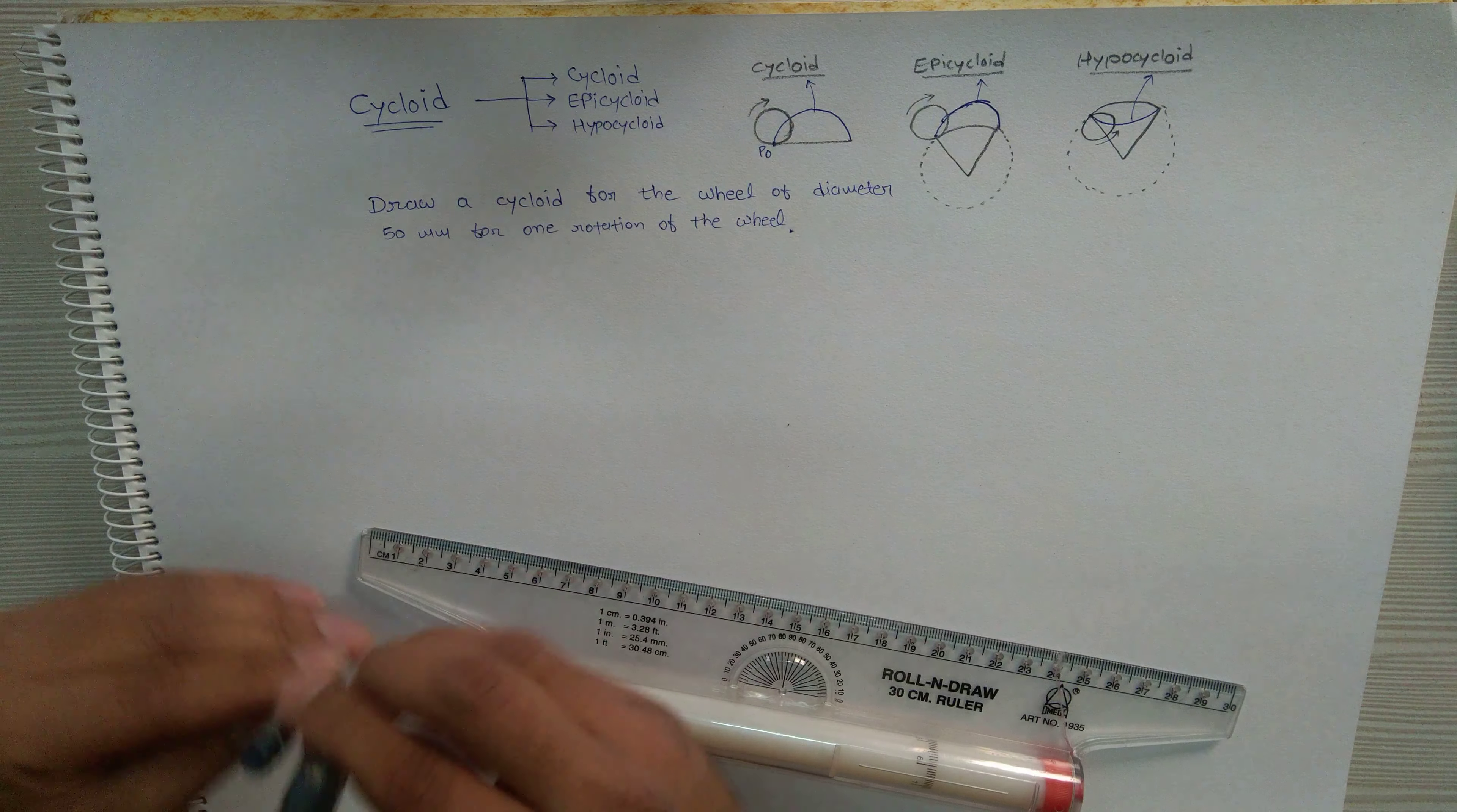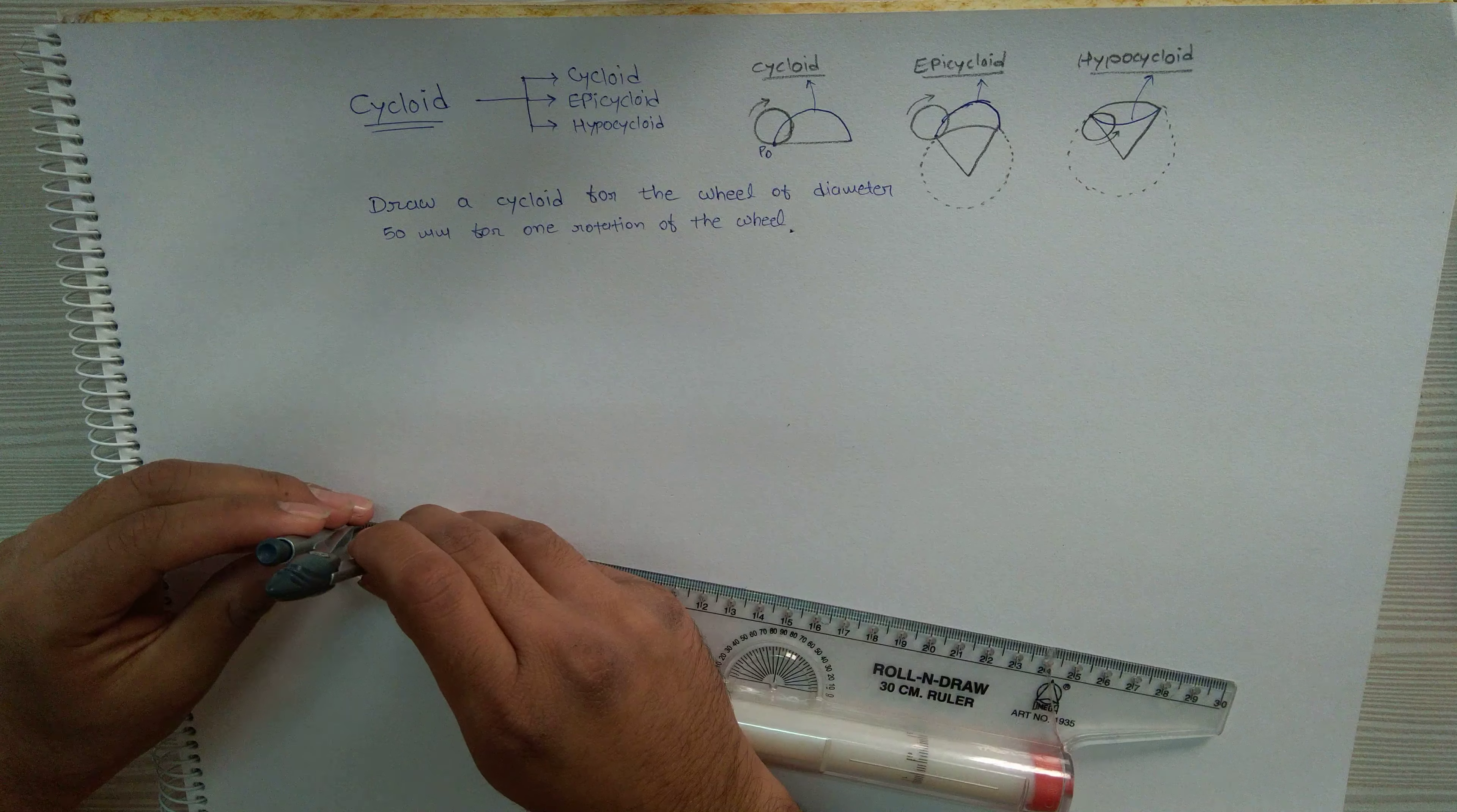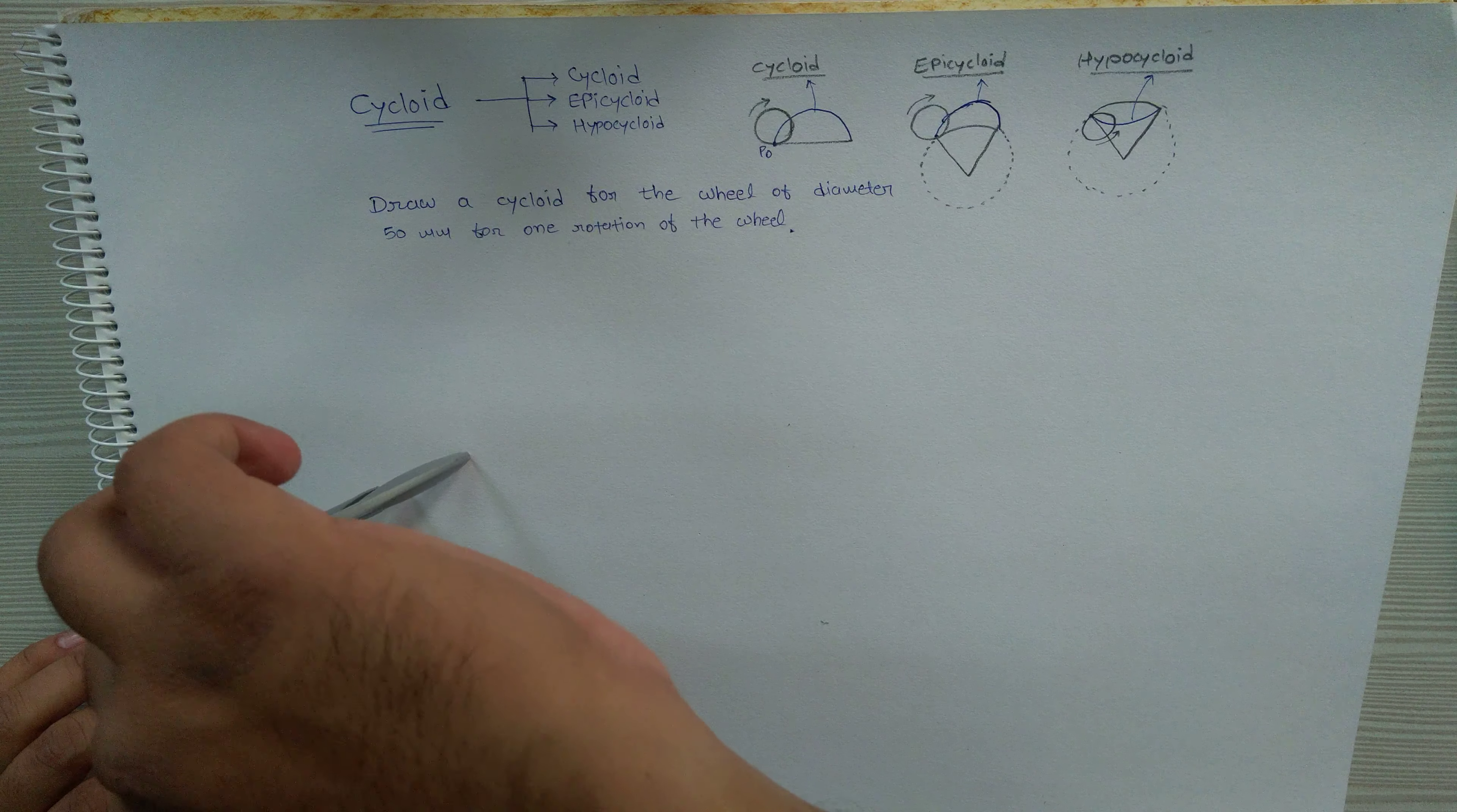50 mm is the diameter, so 25 mm is the radius. Take 25 mm radius in the rounder and draw a circle.